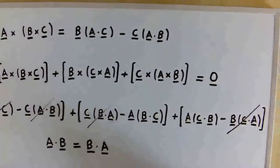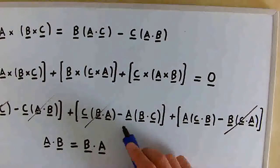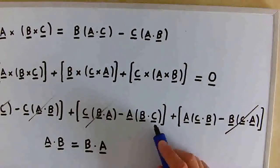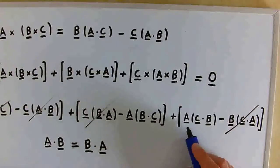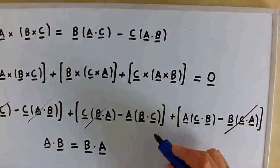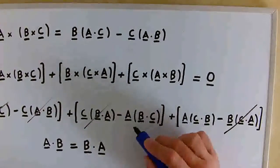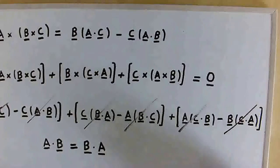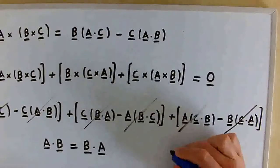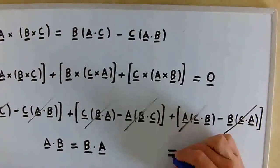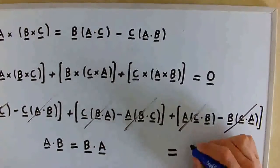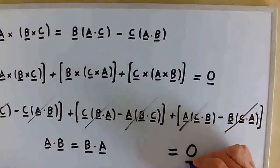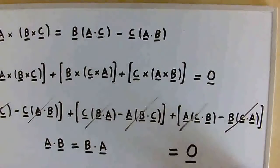We also have a minus C times (A dot B) and a plus C times (B dot A), and since these two dot products are exactly the same, these two terms also cancel out. Finally, we have a minus A times (B dot C) and a plus A times (C dot B), so these terms also cancel out. The expression does in fact equal the zero vector.